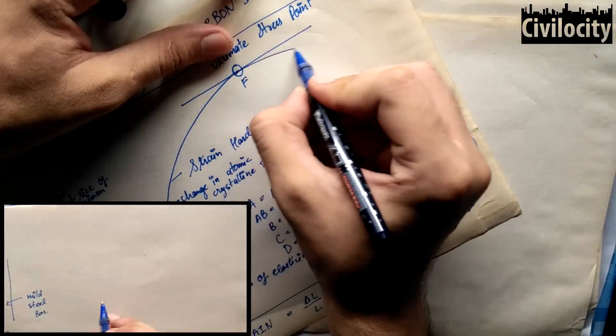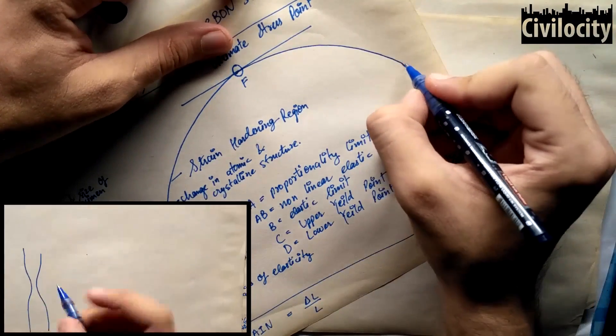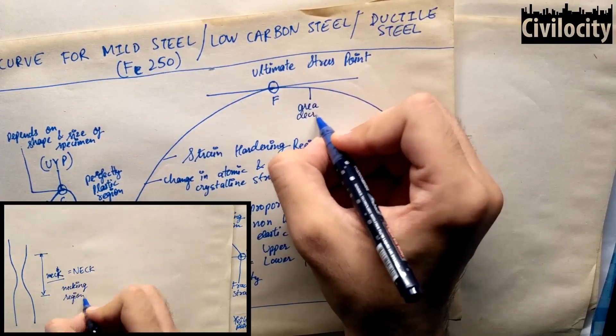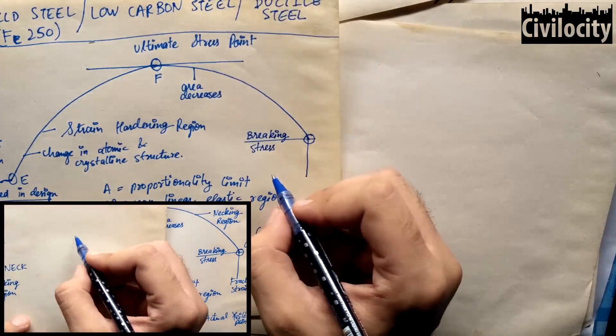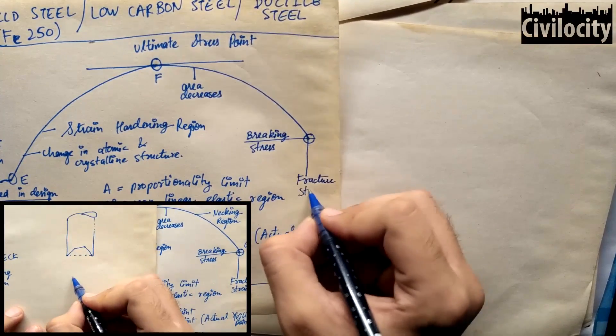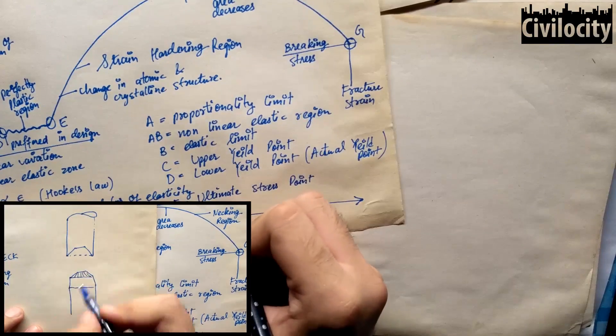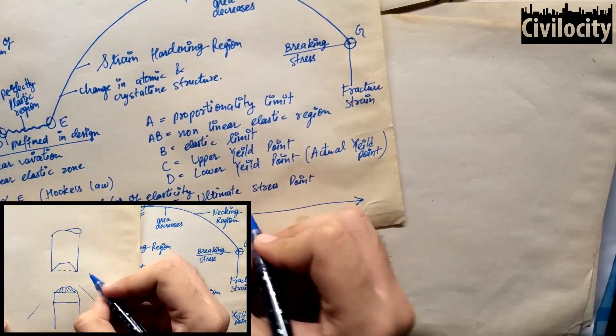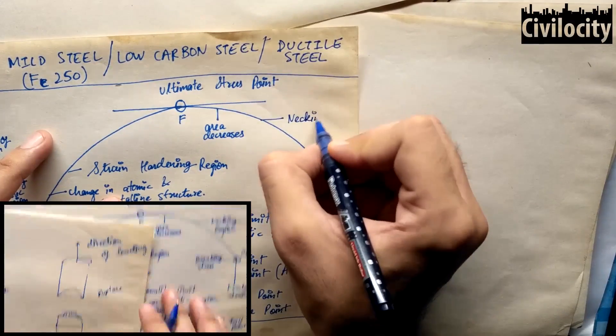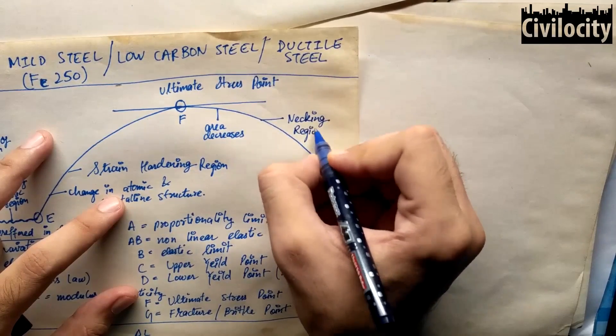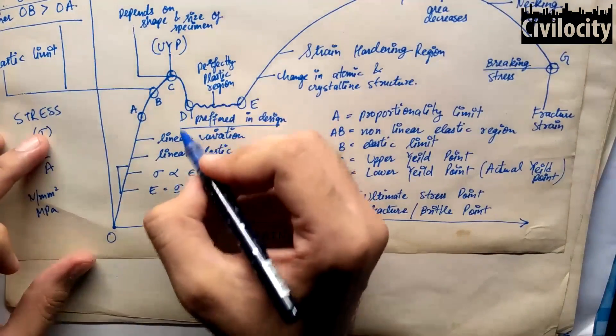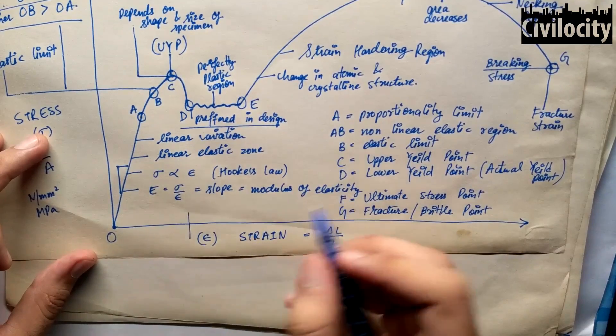After this ultimate stress point, on further application of load, the area of cross-section drastically decreases and a neck shape starts producing in our specimen. On further application of load, the diameter starts decreasing resulting in breaking of our specimen. The point at which our specimen breaks is called the fracture point or brittle point and the corresponding stress is called breaking stress and the corresponding strain is called fracture strain. The region between F to G is called the necking region. One writer has mentioned that from point F to G is called strain softening zone, but this region is called the necking region.